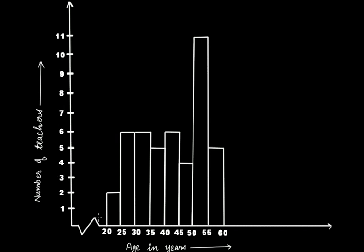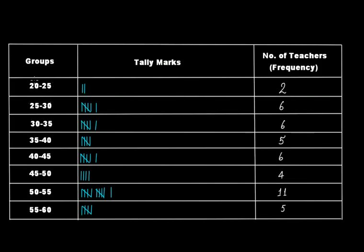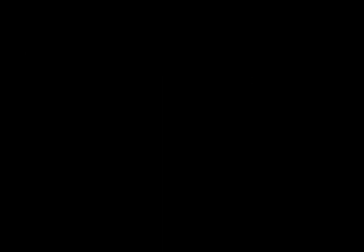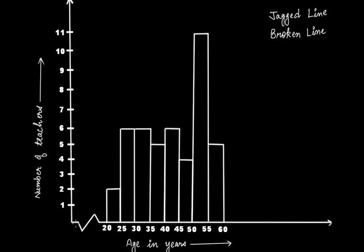The most important thing you can see here is this amazing thing - this is called jagged line or broken line. Why we have drawn it here? We don't have any information between 0 to 20. We don't have any information for 0 to 5, 5 to 10, 10 to 15, and 15 to 20, because in our example the minimum age we have taken here is 21 and the max age is 60. There's no teacher in this school that is below age 20. That is why we don't have any information between 0 to 20. Since we don't have any information between 0 to 20, that's why we have drawn a jagged line or broken line.